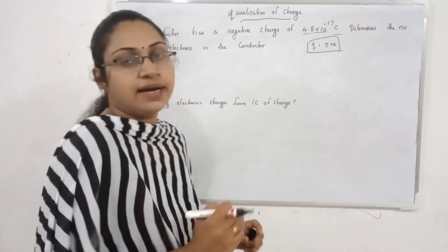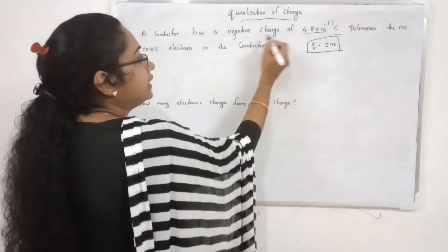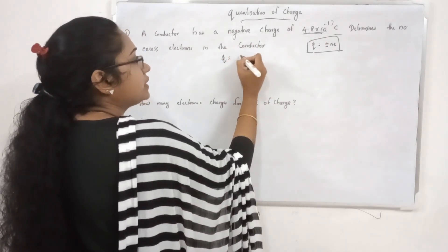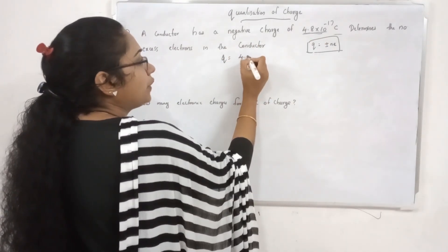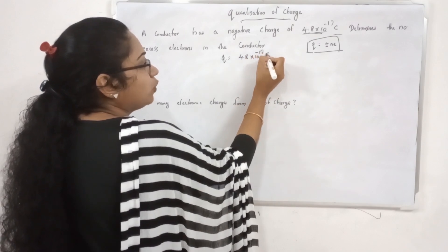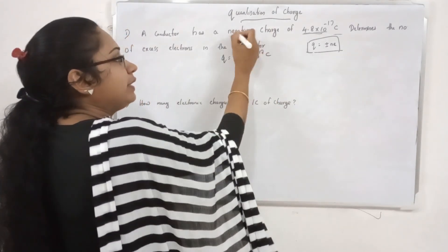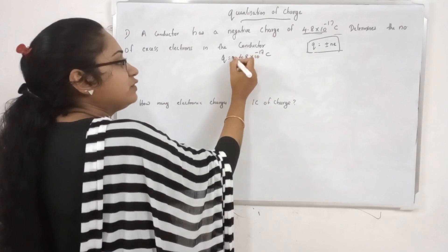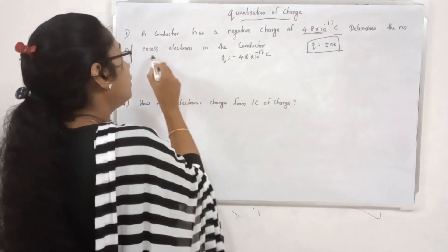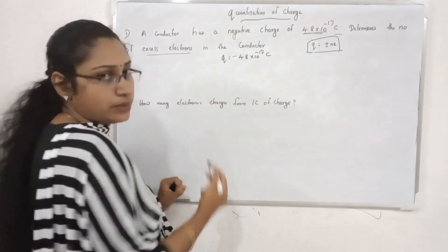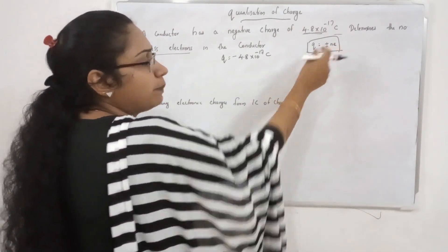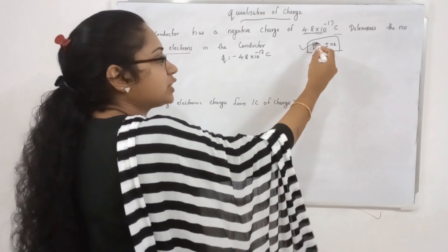We have a charge of 4.8 × 10⁻¹⁷ coulombs — that means negative charge here. So we have a negative charge. Now, what is the number of excess electrons? The equation is Q = ±n·e.